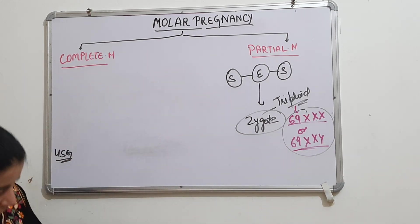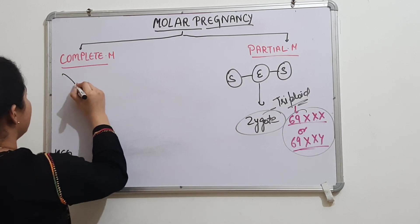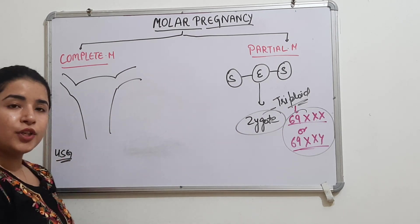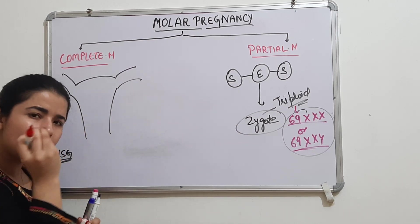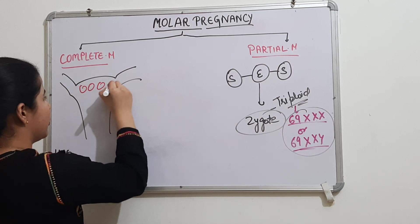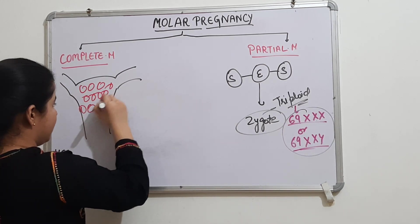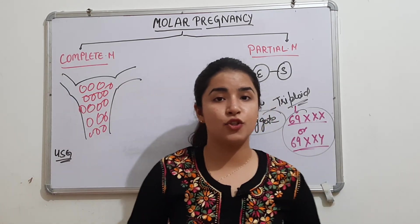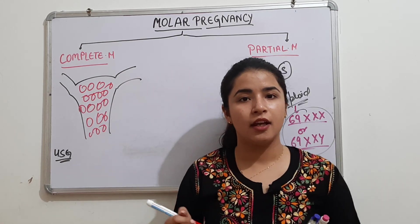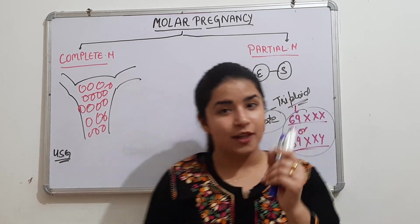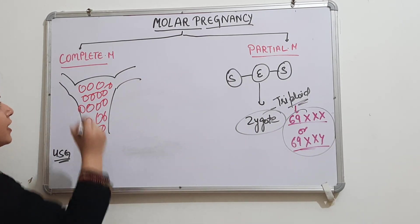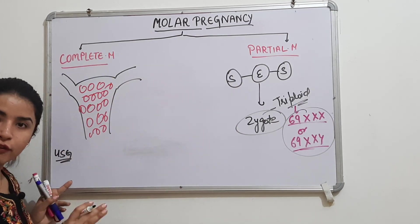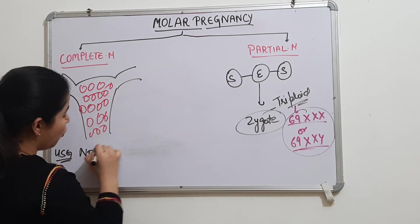On ultrasound in a complete mole, you will see small grape-like vesicle structures spread all over the uterus. Importantly, no fetal tissue will be present. Even though beta HCG is very high, no fetus forms because the egg lacked genetic material — so fetus formation is absent.